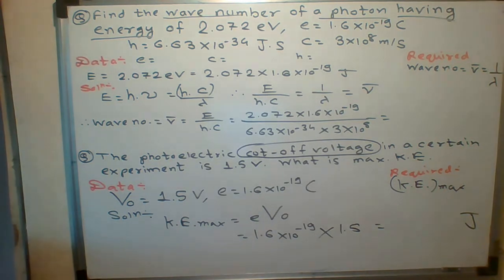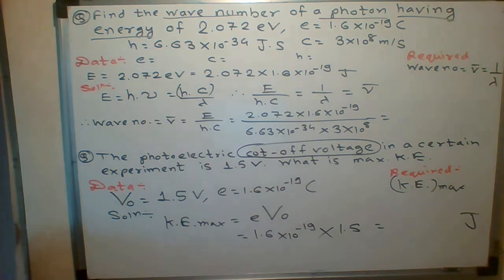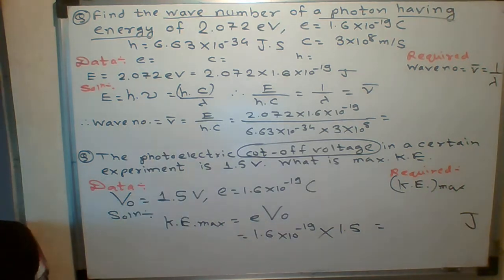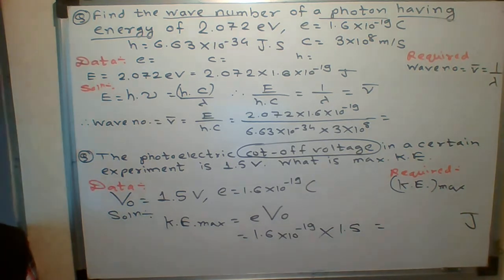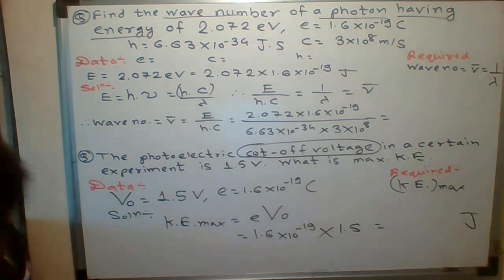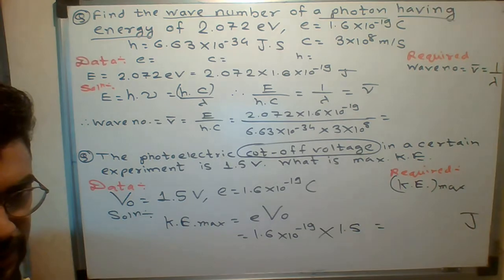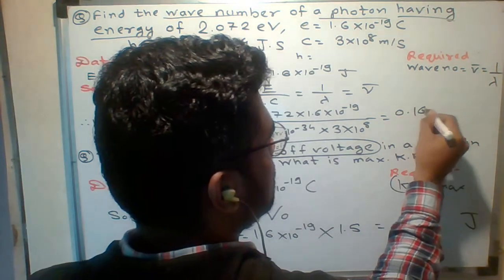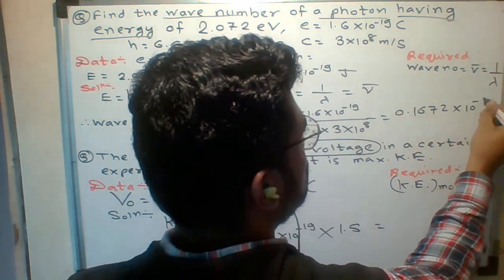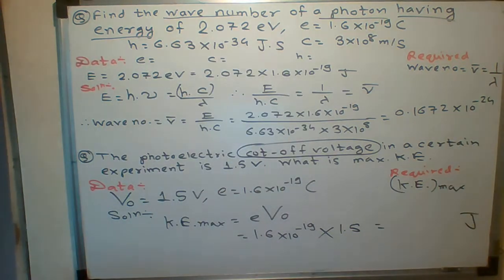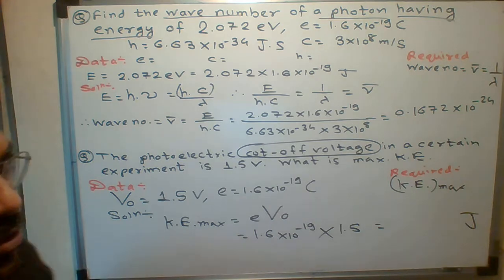Did everyone understand both numericals? They are really easy. Tell me the value of wave number. Munshi said 0.1620 × 10⁻²⁴. Let me check — and what is the unit? The unit of wave number, Munshi, what is the unit?